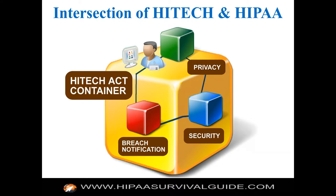There is no business associate 'lite' for software vendors or any other business associates. You now have to comply statutorily with the privacy rule, security rule, and breach notification rule. HHS or a state attorney general can come after you directly as a business associate, quite apart from whether or not you have a contract signed with the covered entity. You become a business associate by operation of law — if you are taking a covered entity's PHI and doing something with it on their behalf, you are a business associate even without a contract. If you share PHI with a subcontractor for them to perform a business function on your behalf, that subcontractor is also a business associate by operation of law.